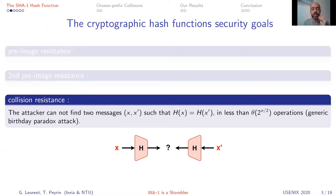Collision resistance means it must be hard for an attacker to find a collision. A collision is simply two distinct messages x and x' that through the computation of the hash function lead to the same hash value. By 'hard' we mean more complex than 2 to the n over 2 operations, where n is the size of the hash value.